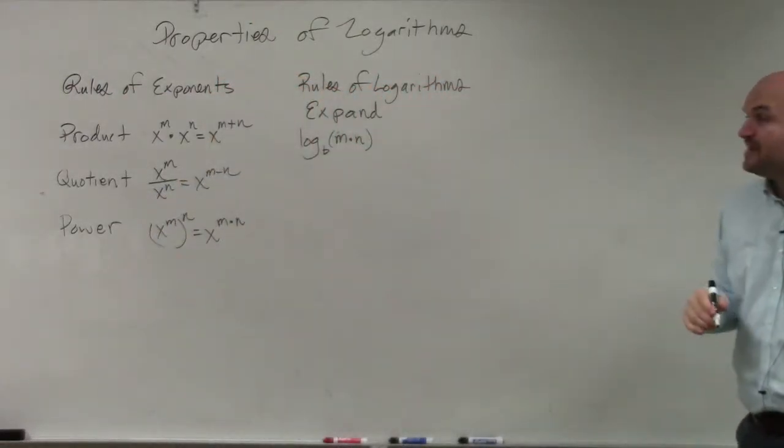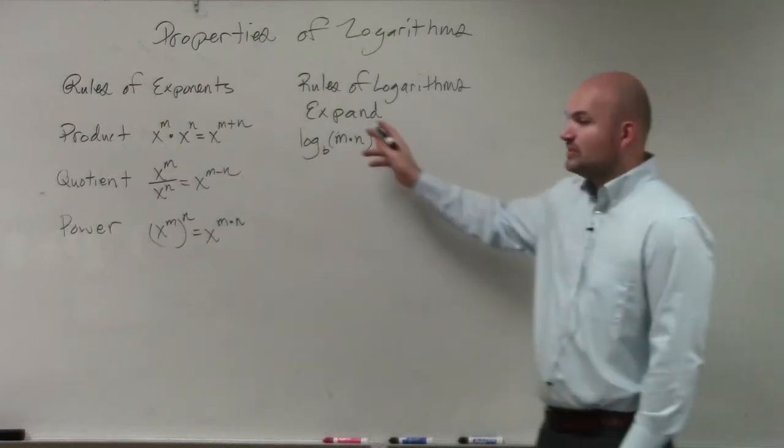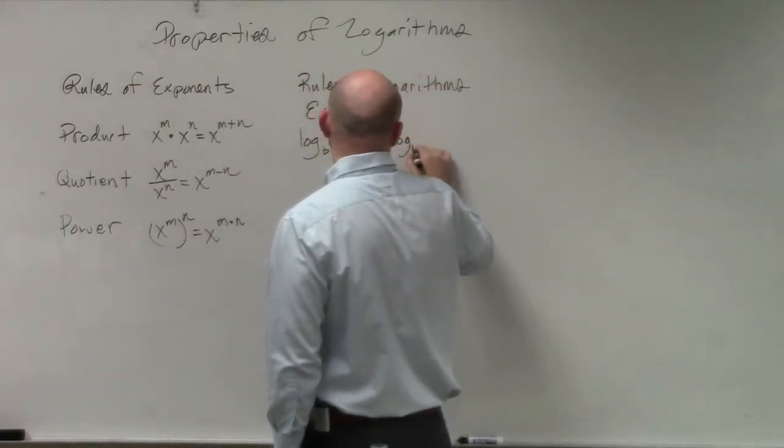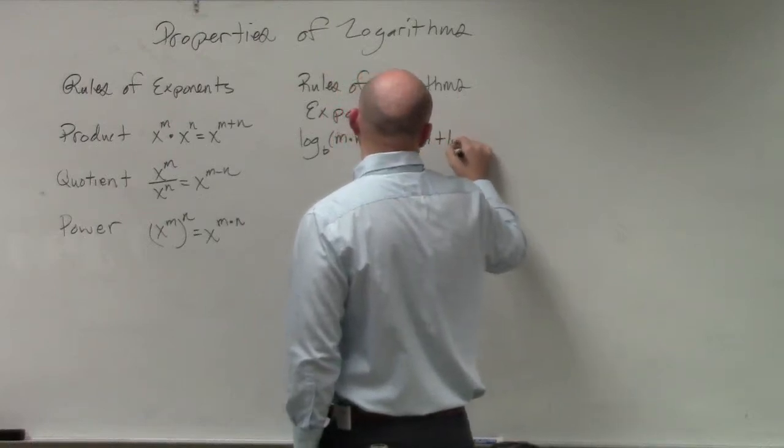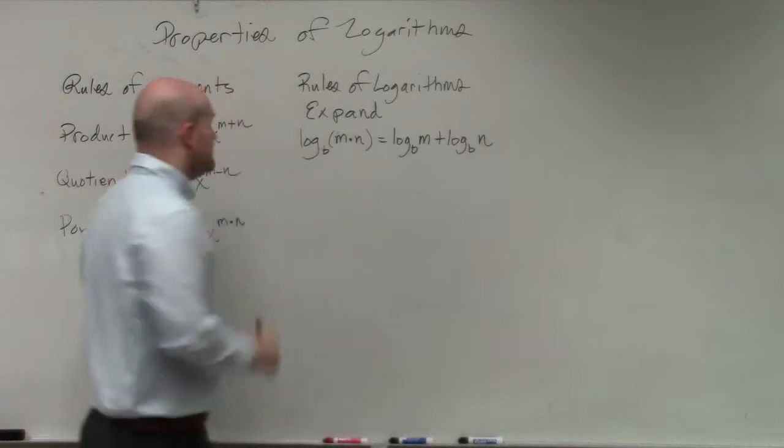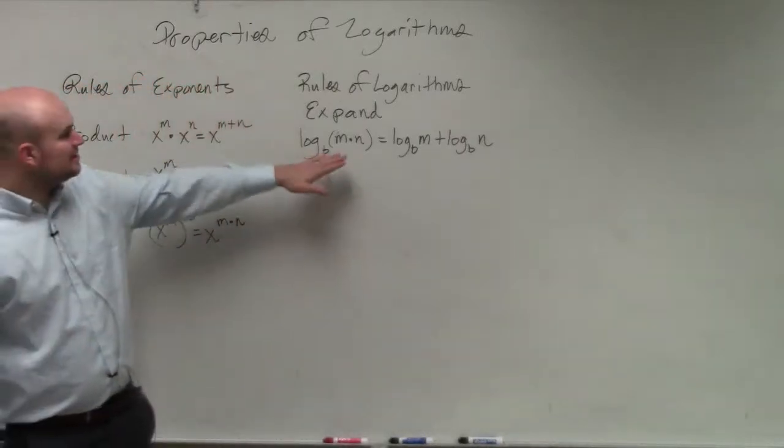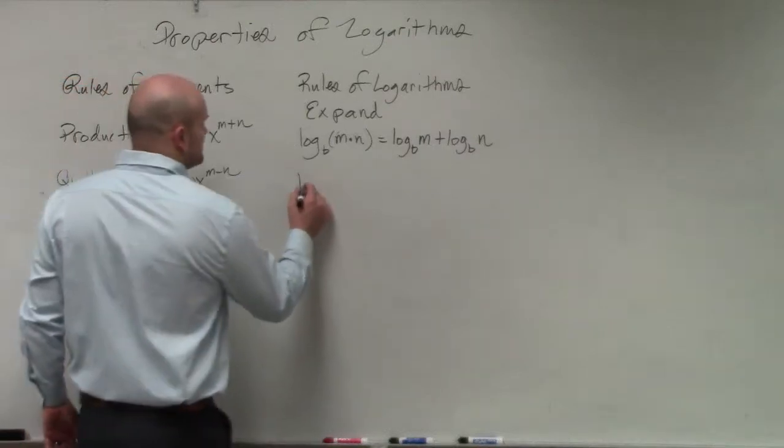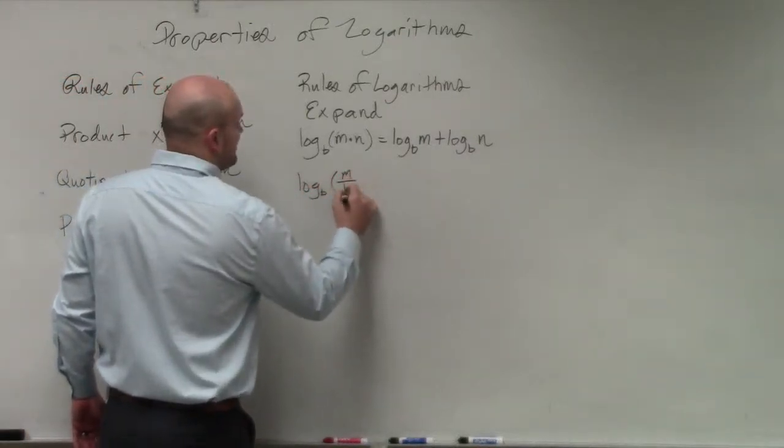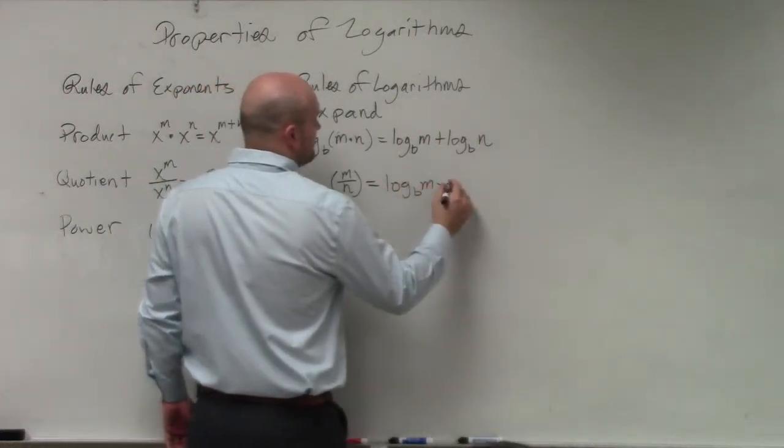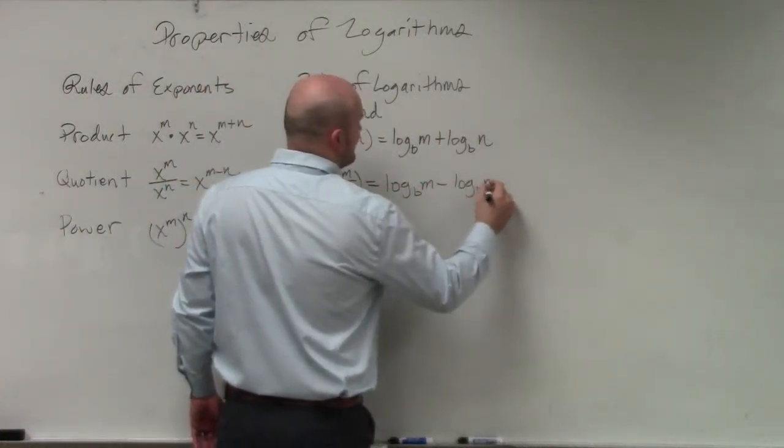If I have the logarithm of some base with the product of two values, that equals logarithm base b of m plus logarithm base b of n. And you guys can see that is very similar to what we have over here for that product. For the quotient rule, it's going to be the same relationship. If I have m divided by n, that equals log base b of m minus log base b of n.